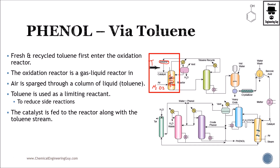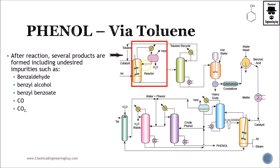Toluene is kept at the minimum as the limiting reactant as possible in order to avoid side reactions, especially reduction reactions and formation of other oxidized material. We want to avoid benzaldehyde production, benzaldehyde alcohol, benzaldehyde benzoate and so on. We want to maximize phenol.